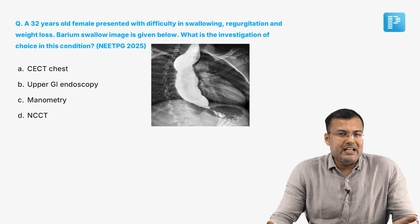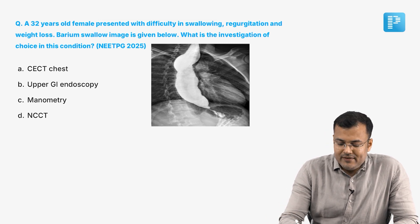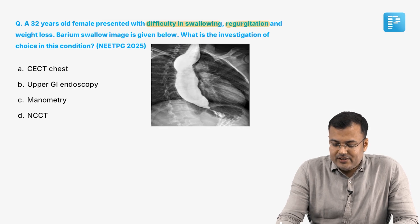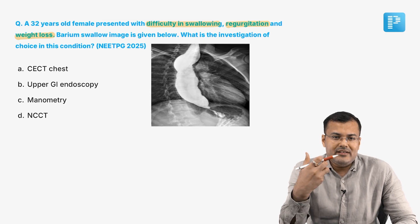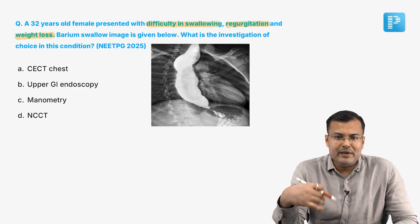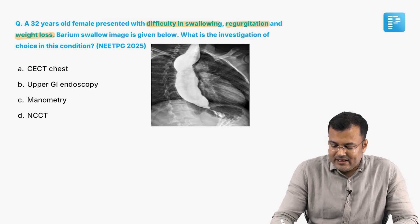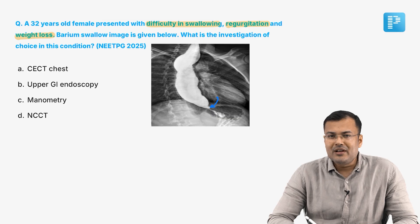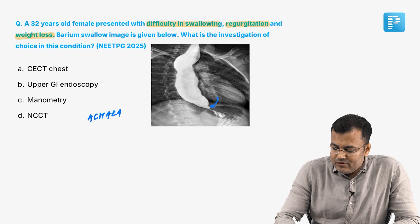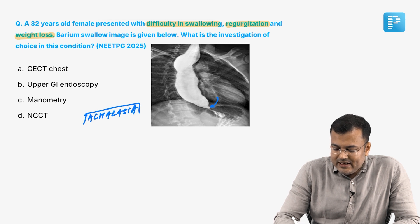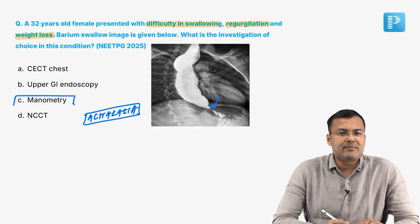See this famous question, also taken from NEET PG 2025. A 32-year-old female presents with difficulty in swallowing, regurgitation and weight loss. This is the classical triad of achalasia cardia. The barium swallow image shows a rat tail appearance. Classically, this is achalasia cardia. For motility disorders of the esophagus, the investigation of choice is manometry. The correct answer is manometry.